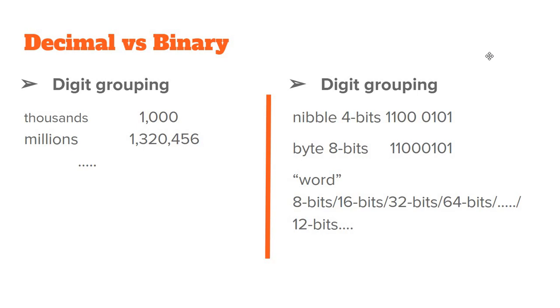Now, in binary we have different types of groupings. For example, 4 bits, so 4 binary digits. Binary digit is also known as a bit. So, a group of 4 bits, so 4 binary digits, is called a nibble. So, in this example you see 2 nibbles,